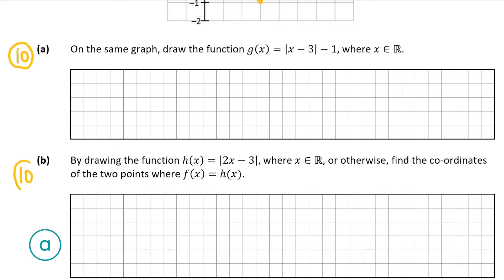Part B is also worth 10 marks. By drawing the function h of x, which is equal to the absolute value of 2x minus 3, we have to find the coordinates of the two points where f of x equals h of x — in other words, the points of intersection. So we have to draw the function h of x first.